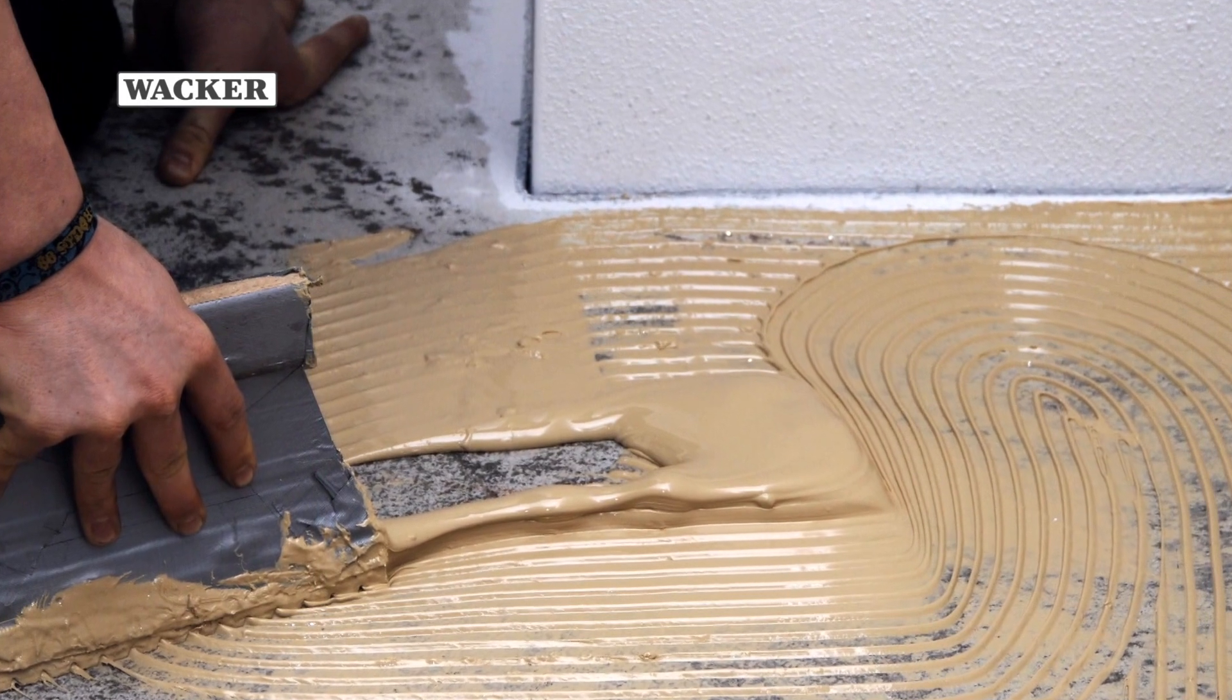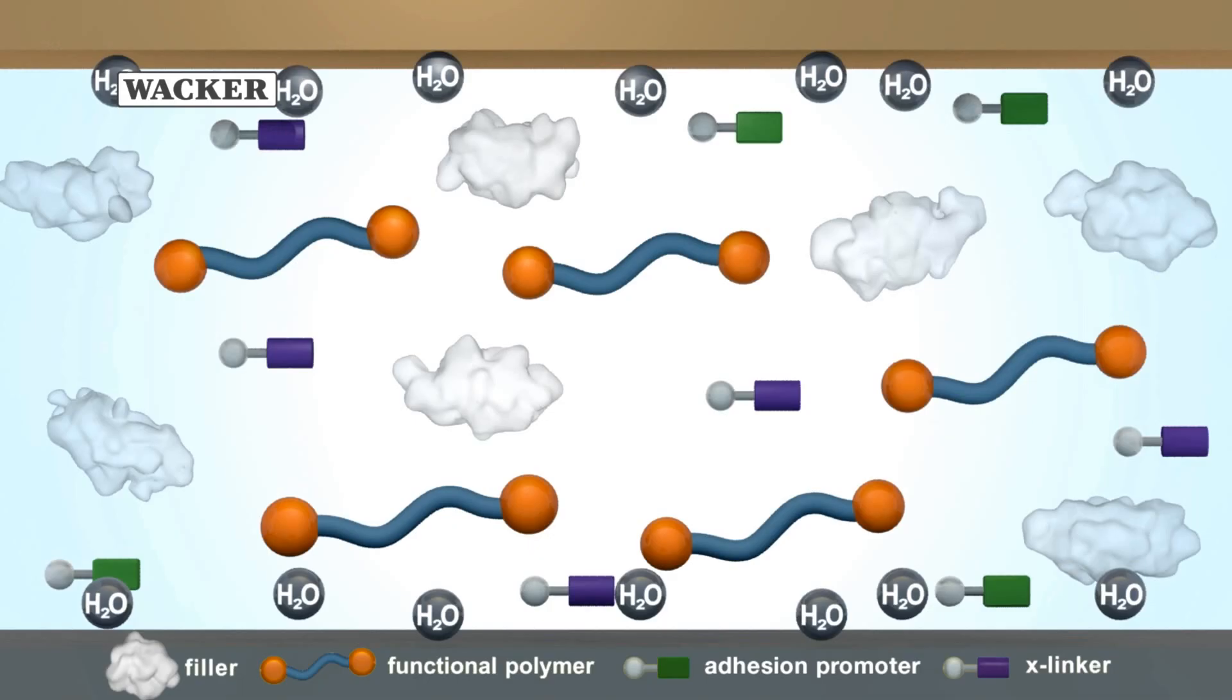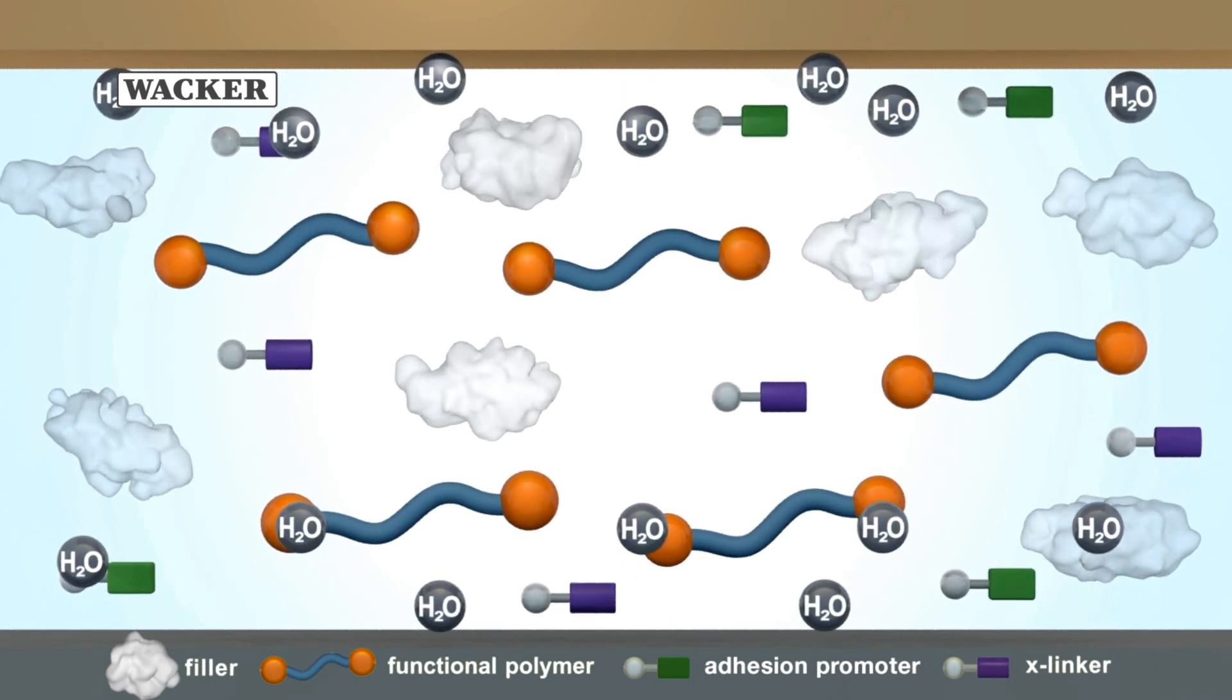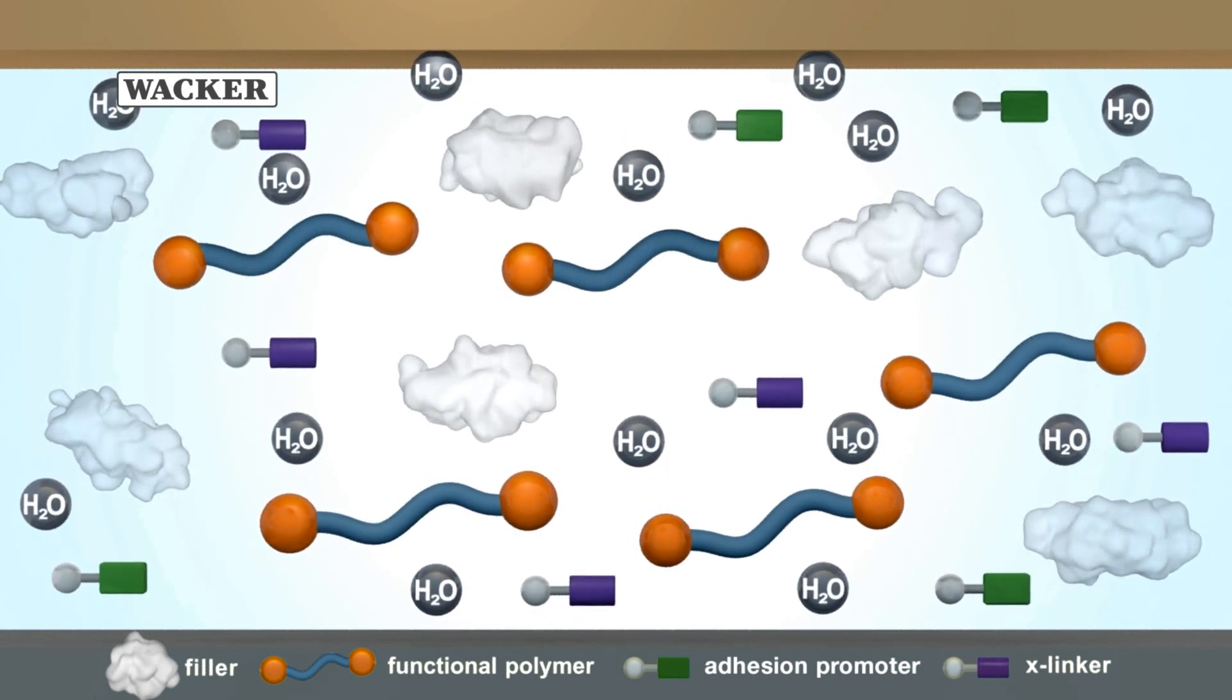Let's take a closer look at the alpha effect using the example of a Parquet flooring adhesive. Typical components of an adhesive are the alpha-silane-terminated polymer, fillers, adhesion promoters and a curing agent.